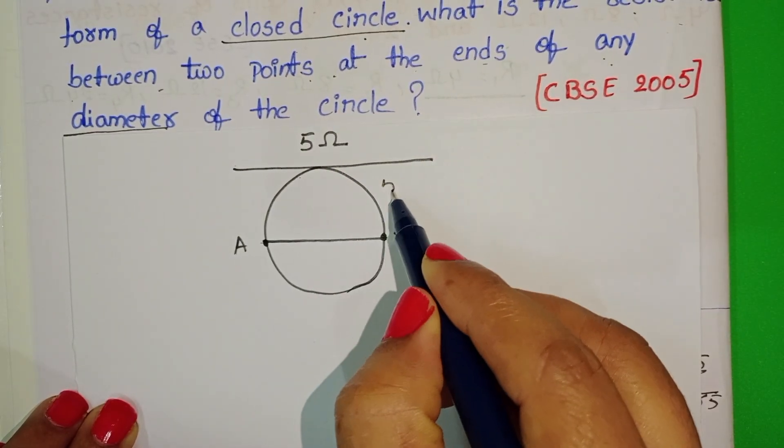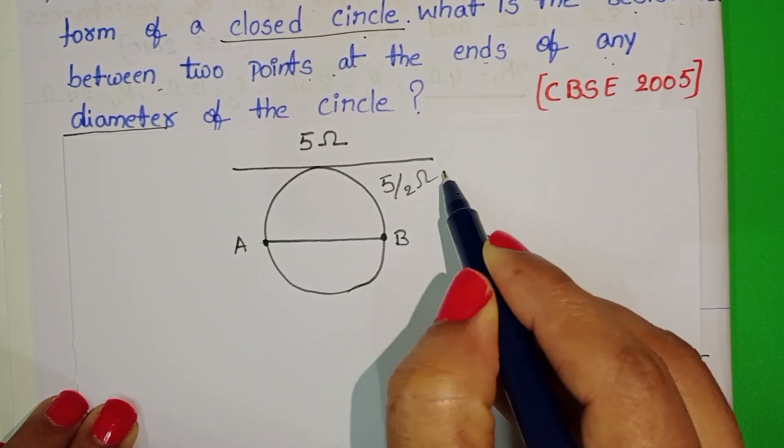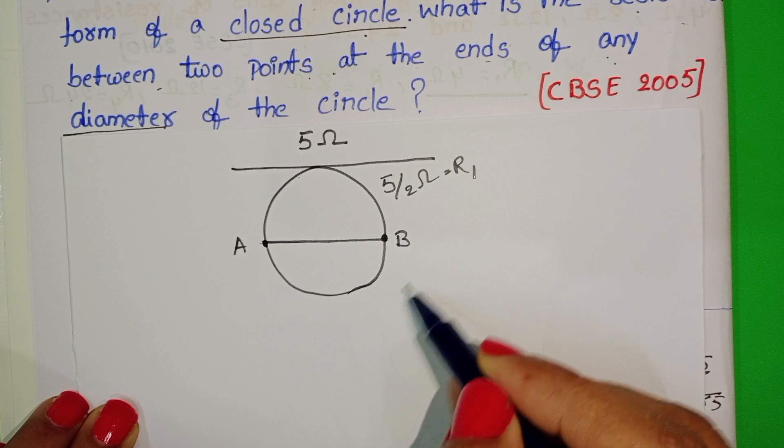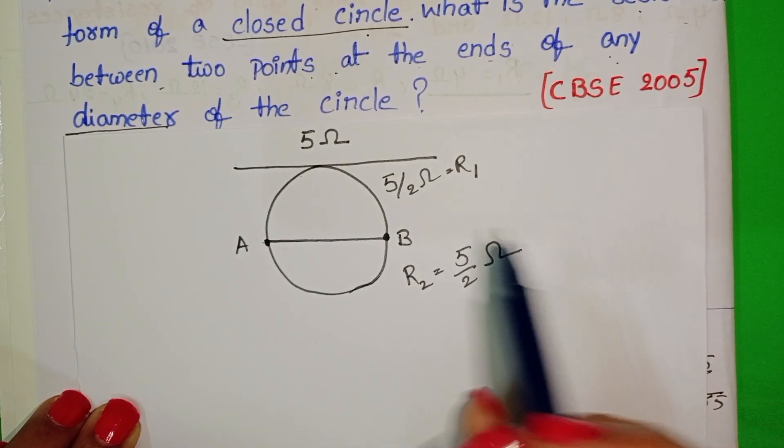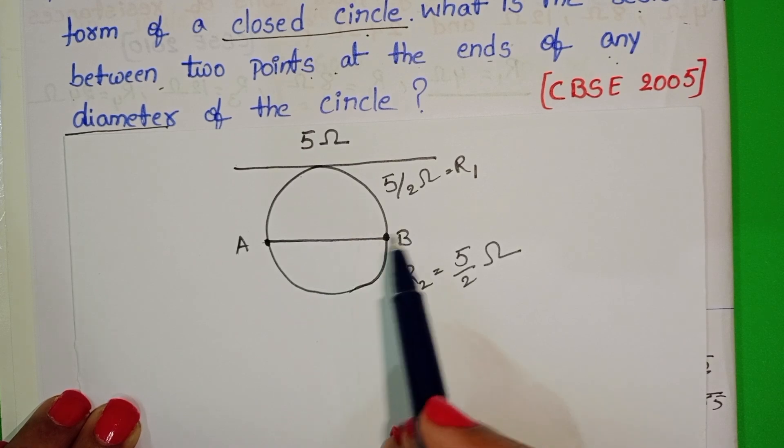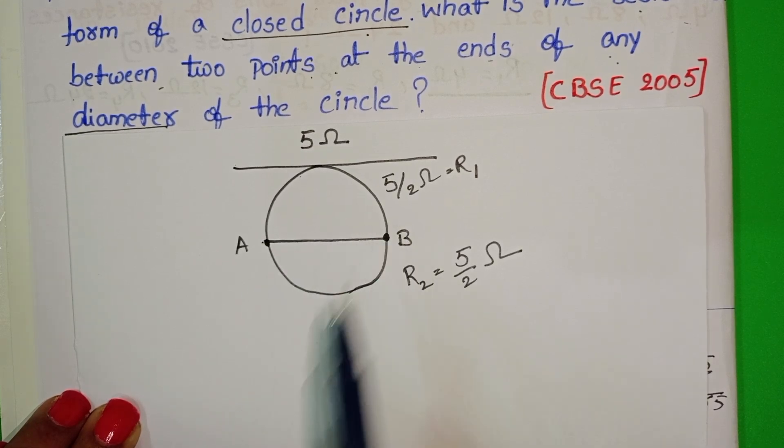Resistance of this part is 5 by 2 ohm, let it be R1. And resistance of the lower part is also 5 by 2 ohm. These two are connected in parallel between these two points.